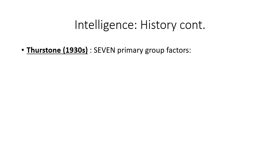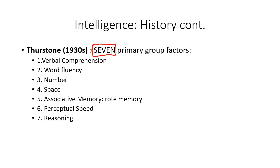Then in the 1930s, about ten years later, Thurston came along and said no, that's not good enough — there's too much going on and you can't define intelligence as one thing. So Thurston came up with seven primary groups or intelligences: verbal comprehension, word fluency, number, spatial reasoning, associative memory (which is rote memory), perceptual speed (again, reaction times), and reasoning.